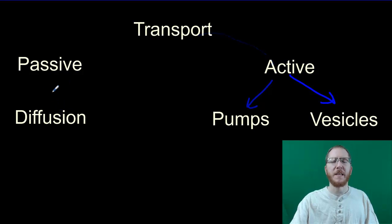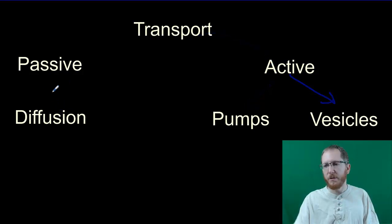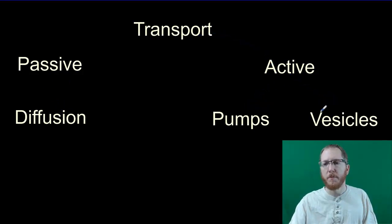Passive and diffusion are going to get rid of a gradient, they're going to spread things out, whereas active transport, pumps and vesicles, these guys will often times cram things together.